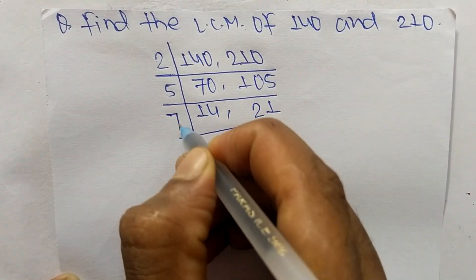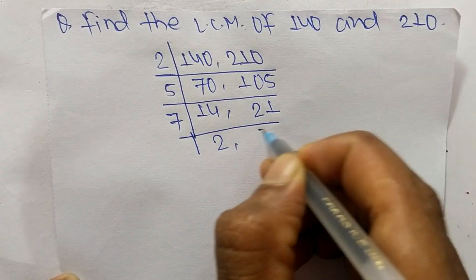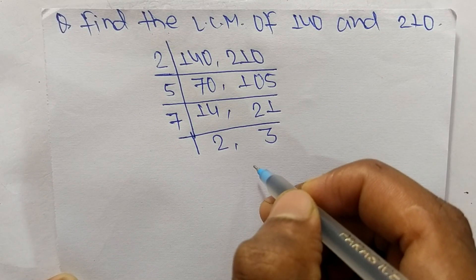so we take here 7. 7 times 2 means 14, 7 times 3 means it is 21. So at